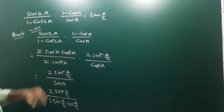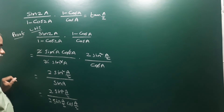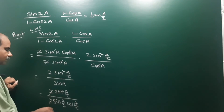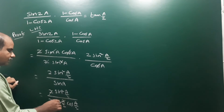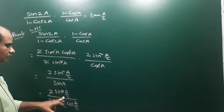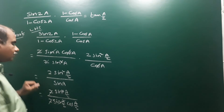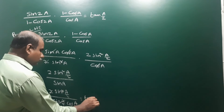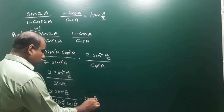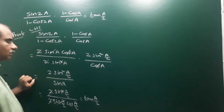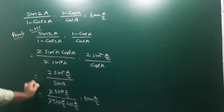Like terms cancel — the 2 and 2 cancel, and one sin(a/2) cancels, leaving sin(a/2) divided by cos(a/2), which is tan(a/2). This equals our RHS, hence proved.